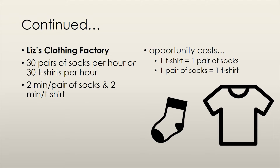Our second producer, Liz, also runs a clothing factory and only produces socks and t-shirts. The difference is that in a given hour, Liz can produce either 30 pairs of socks or 30 t-shirts. Thus, she takes 2 minutes to produce a t-shirt and 2 minutes to produce a pair of socks. She could either use 2 minutes to produce 1 t-shirt or 1 pair of socks, so her opportunity cost of producing a t-shirt is 1 pair of socks, and her opportunity cost of producing a pair of socks is 1 t-shirt.